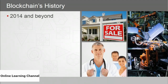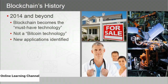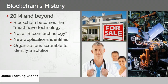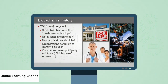What happened to blockchain since 2014 is most interesting: for six years it was the technology of Bitcoin, when it really was much more than that. Blockchain started to become the must-have technology — not just a Bitcoin technology. New applications were identified, and organizations scrambled to find solutions for real-world problems. Companies like IBM, Microsoft, and Amazon are only a few of the organizations to bring blockchain solutions to market.